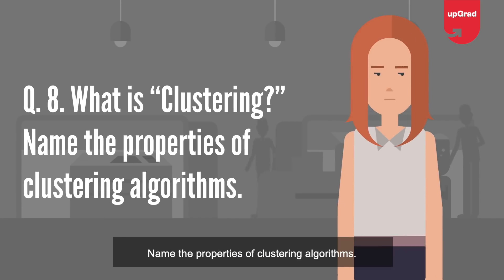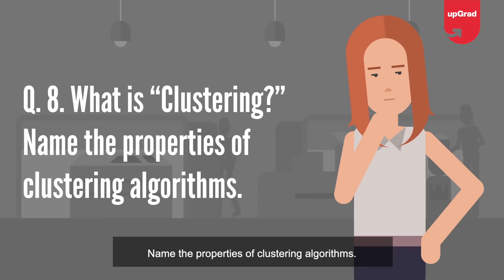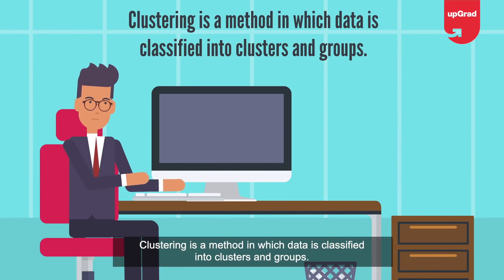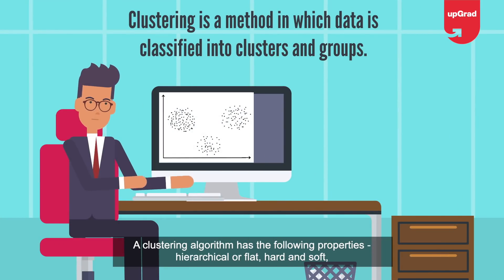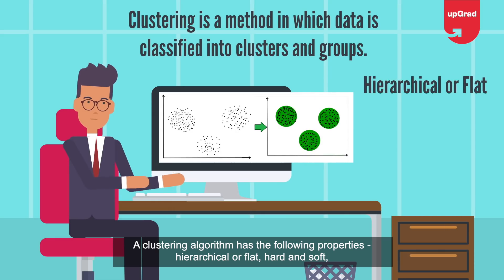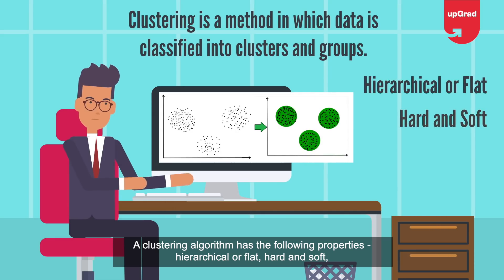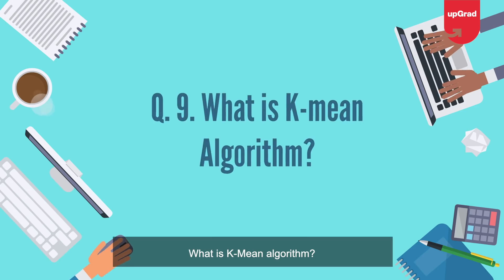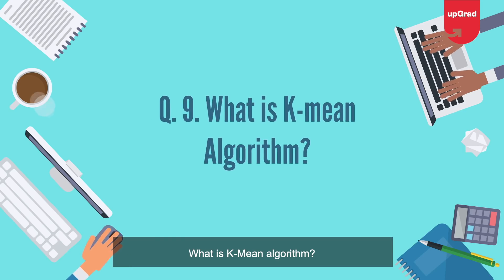What is clustering? Name the properties of clustering algorithms. Clustering is a method in which data is classified into clusters and groups. A clustering algorithm has the following properties: hierarchical or flat, hard and soft, iterative, and disjunctive.